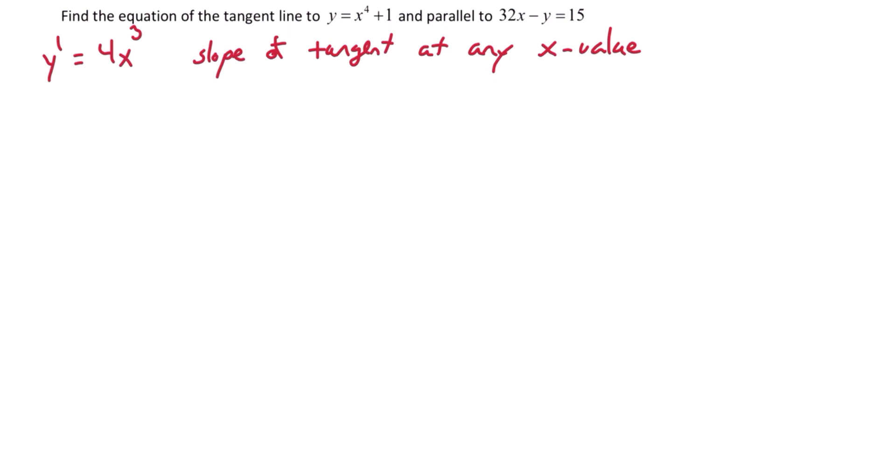The next thing we need to recognize is the fact that we want to be parallel to a given line. So let's figure out what it means to be parallel to 32x minus y equals 15. If you're parallel to that line, you have the same slope. So let's find the slope of this line. Subtract 32x and then divide by negative 1 and we can see that the slope is 32.